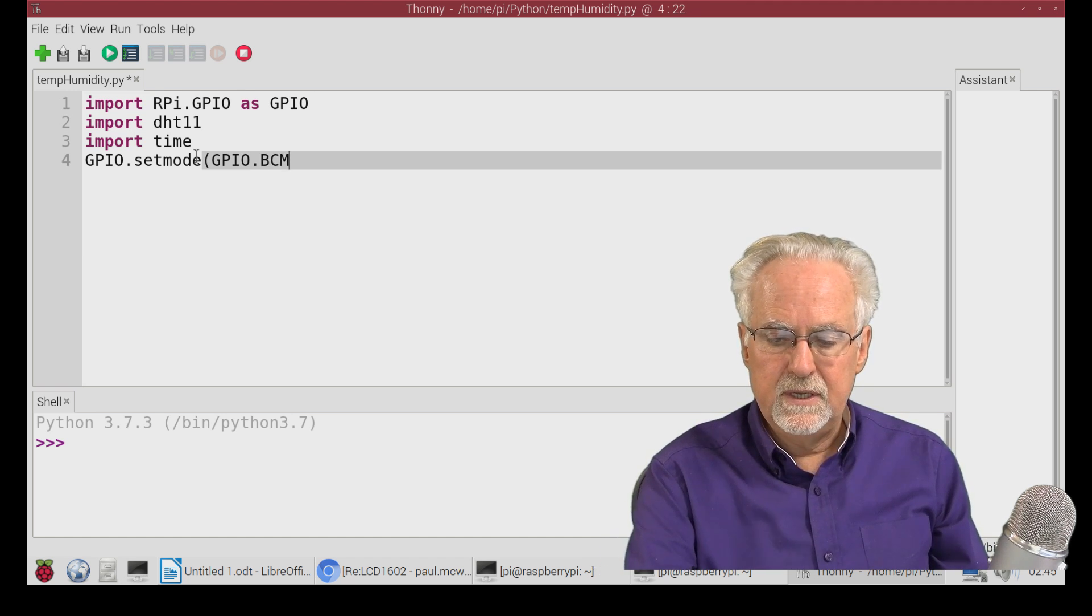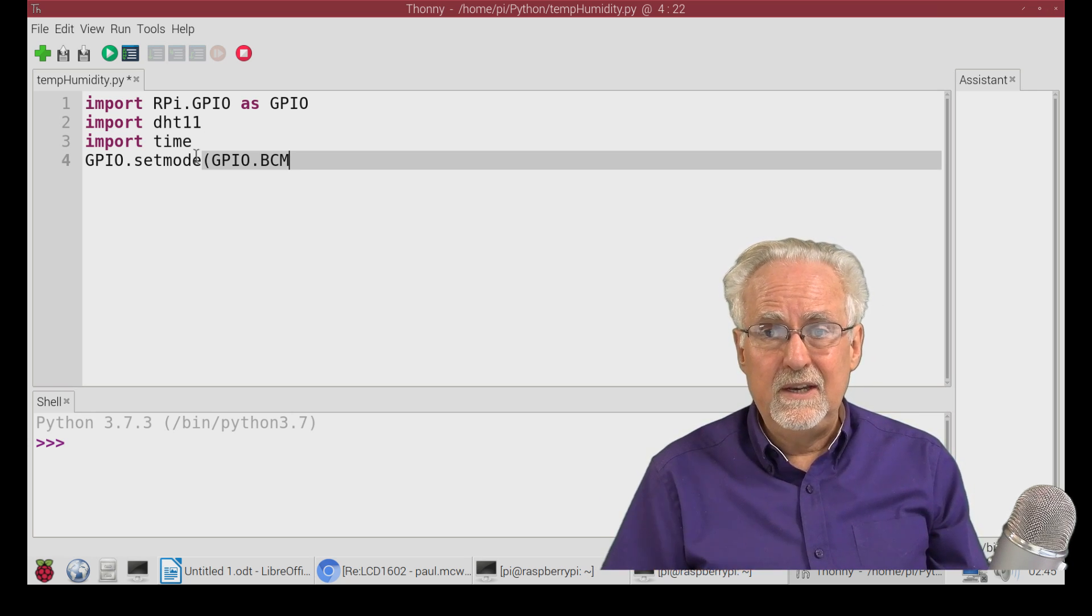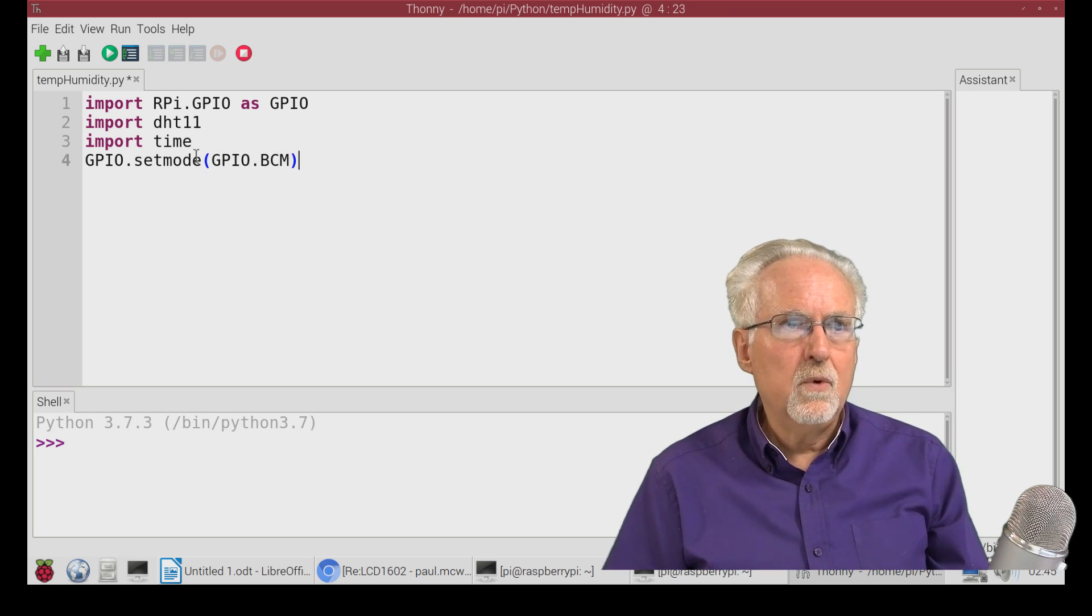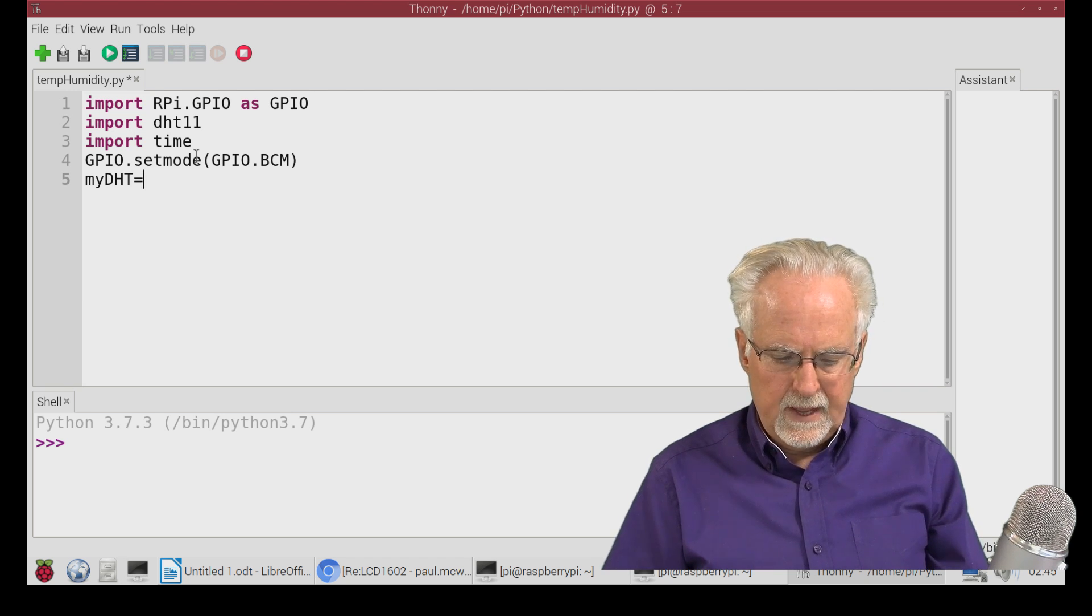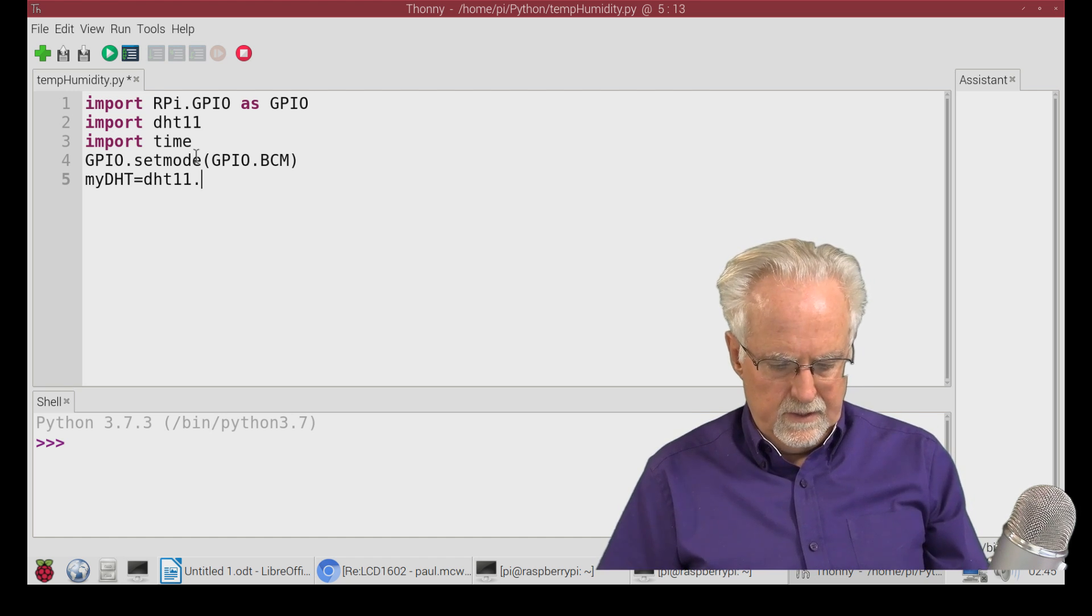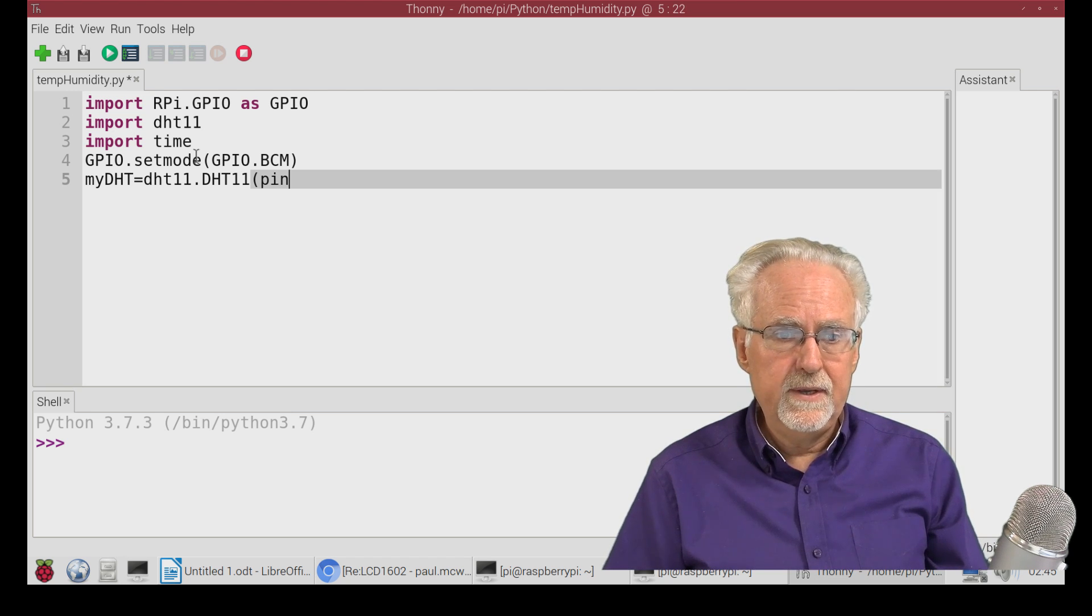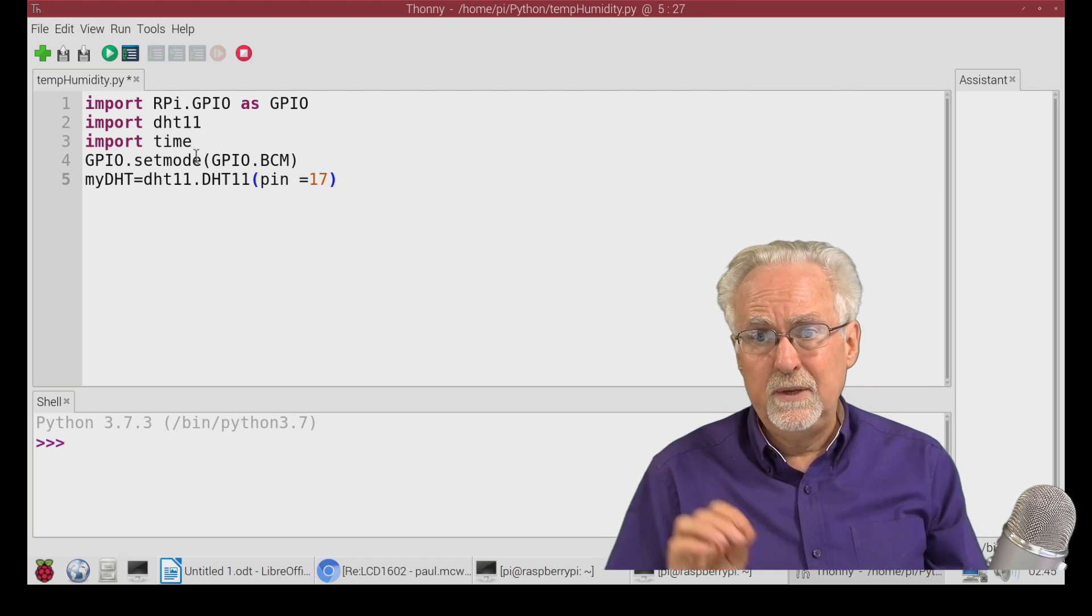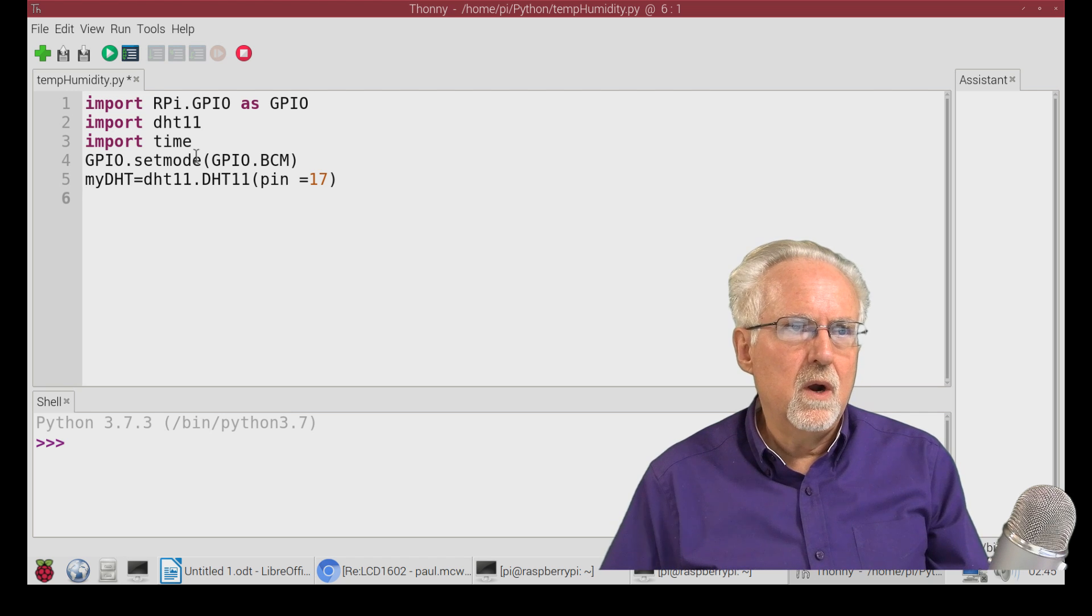Now we're going to need to tell it what board numbering system we are using. So I'm going to say GPIO.setMode, and then we are going to use the GPIO.BCM. Why the BCM? Because this breakout board is labeled with the BCM numbering, and that way I can just read the number right off the pin. Now I need to set up that library. So I'm going to create an object called myDHT, and that is equal to DHT11, the library that we just installed, and then DHT uppercase 11. And I've got to tell it where it is. Mine is on pin equals 17 because that's where we hook that signal pin.